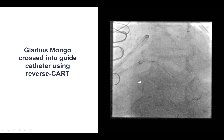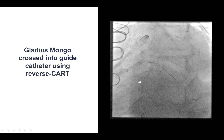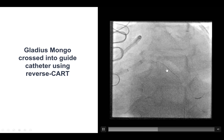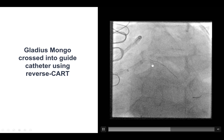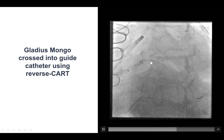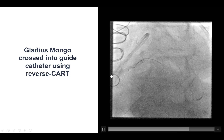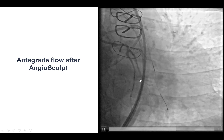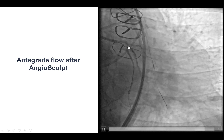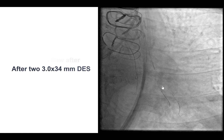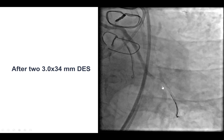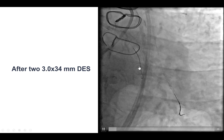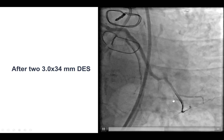We did a reverse CART, inflating a balloon in the circumflex and advancing the retrograde Gladius Mongo guidewire, and that wire eventually went into the antegrade guide catheter. We predilated, and now we restored antegrade flow to that obtuse marginal branch, and then placed two drug-eluting stents, which provided a nice result with flow into the OM.